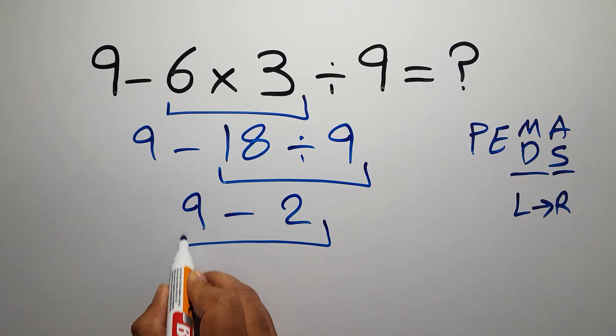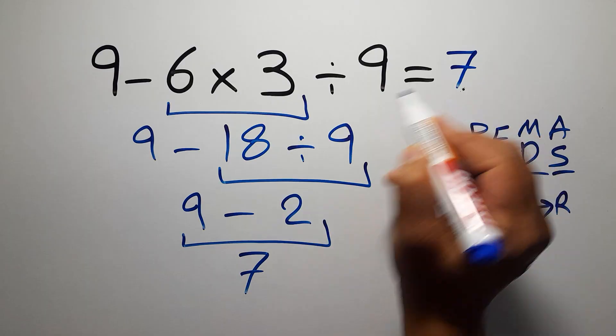Minus 2, which equals 7. And this is our final answer to this problem. The correct answer is 7.